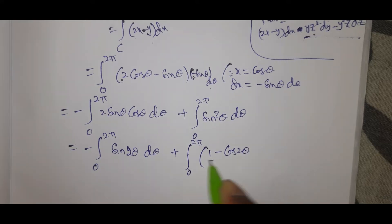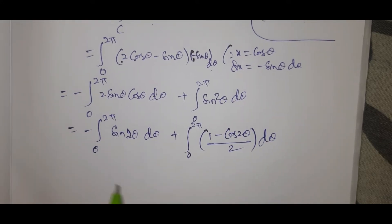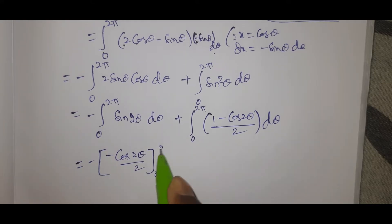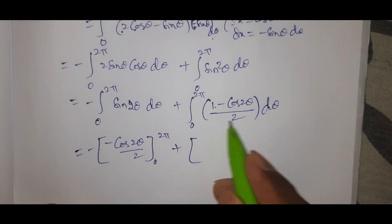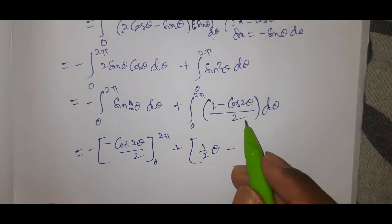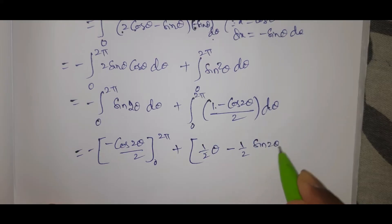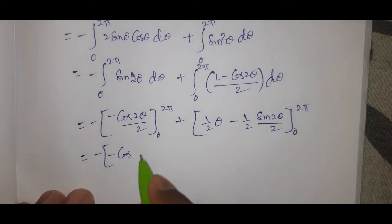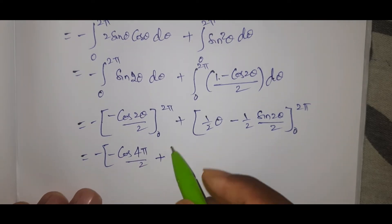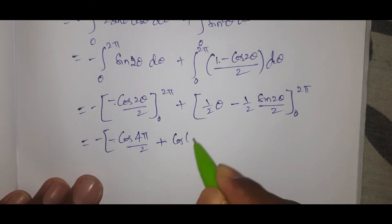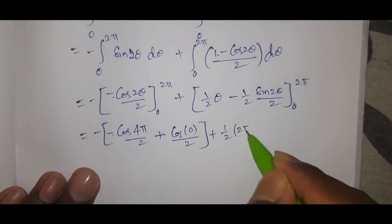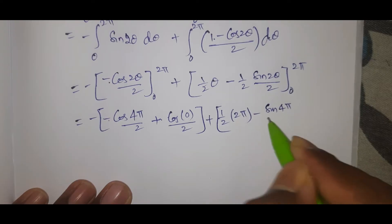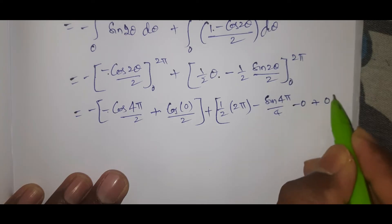Using the identity sin²θ = (1 - cos2θ)/2, we get ∫₀²π sin θ cos θ dθ = [sin 2θ/2] from 0 to 2π, plus ∫₀²π (1/2)(1 - cos2θ) dθ = (1/2)[θ - sin2θ/2] from 0 to 2π. Applying the upper and lower limits gives us the result.